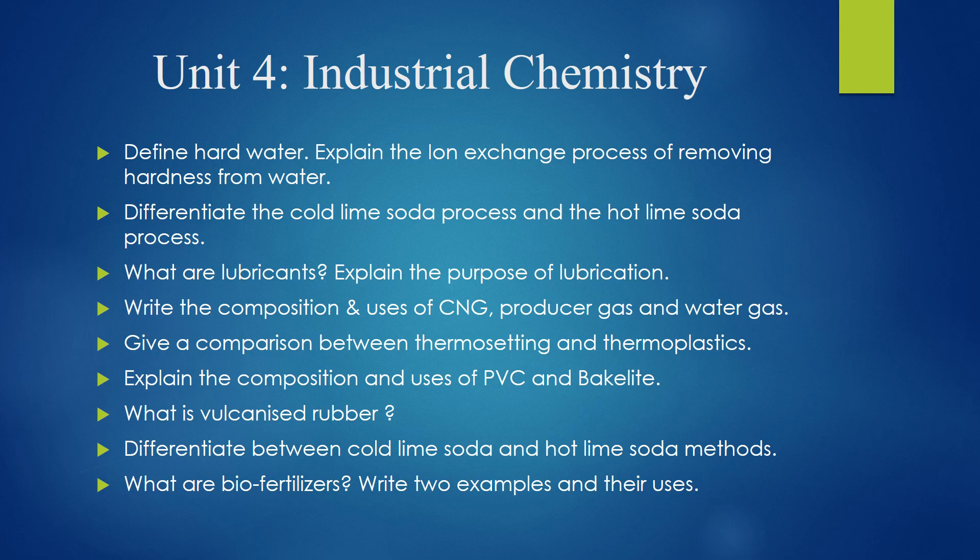From Unit 4, industrial chemistry, we can expect questions like: define hard water, explain the ion exchange process of removing hardness from water, differentiate the cold lime soda process and hot lime soda process, what are lubricants and explain the purpose of lubrication. Next, write the composition and uses of CNG (compressed natural gas), producer gas, and water gas. Next, give a comparison between thermosetting and thermoplastics. Explain the composition and uses of PVC and Bakelite. Next, what is vulcanized rubber?